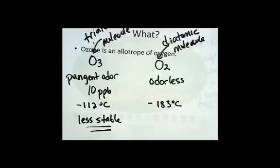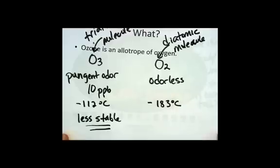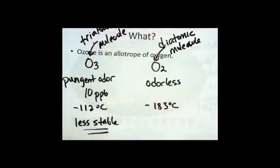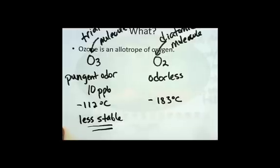All right, so that's what ozone is. It is an allotrope of oxygen. And allotropes, like for example, these two allotropes are both gases, but they do have different chemical and physical properties, not unlike diamond and graphite.